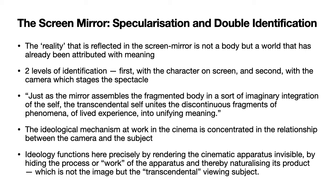The ideological mechanism at work in the cinema is concentrated in the relationship between the camera and the subject. This is precisely where ideology works — where the technologies of the camera create a very unified image, give it to the viewing subject, and make the viewing subject believe that I am seeing through the eyes of the camera, that I am actually the unified subject represented by the gaze of the camera, whereas actually no human being can be that unified subject. The camera is able to capture things that human beings can't actually capture with their visual capacity, but still we are made to believe that our gaze is continuous with that of the camera.